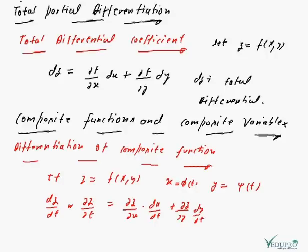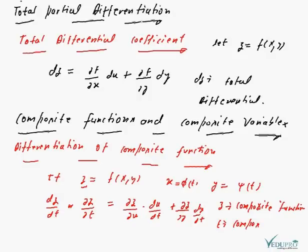In this relation, z is a function of x and y, and x and y are functions of t. So in this relation, z is said to be the composite function and t is said to be the composite variable.